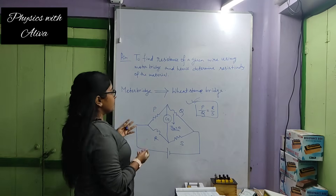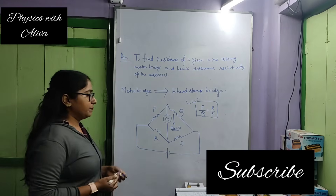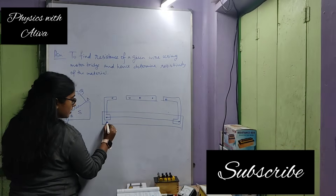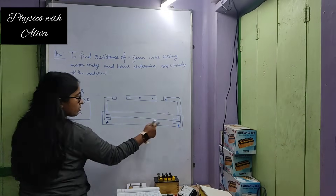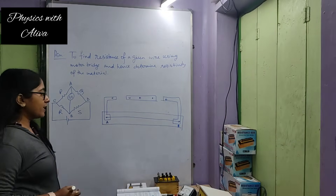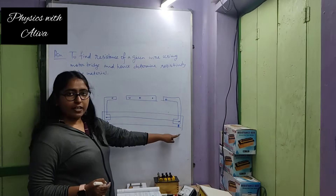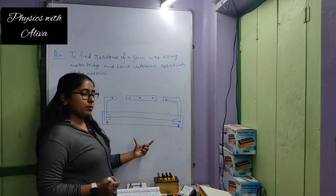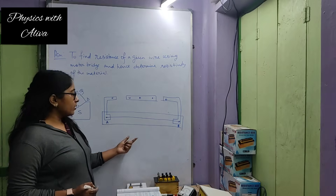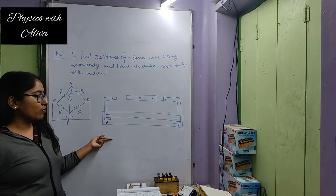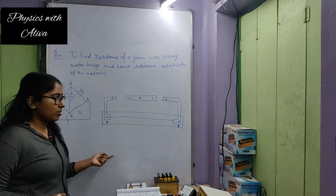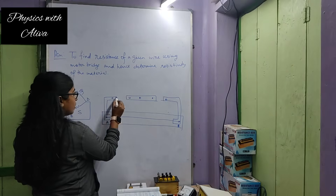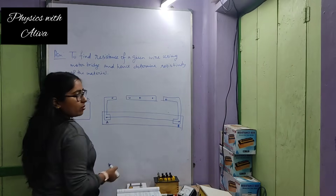The entire meter bridge works on this principle. This AB is the resistance wire of the meter bridge and the length of wire AB is equal to 1 meter, that is 100 centimeters. That's why it is called the meter bridge. And these are all thick copper strips.